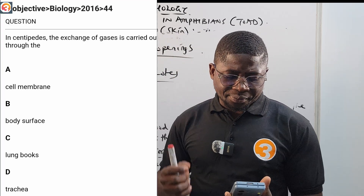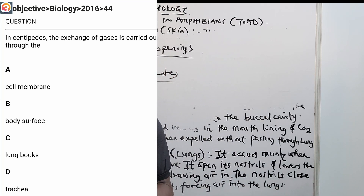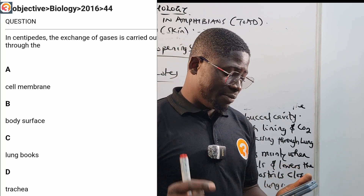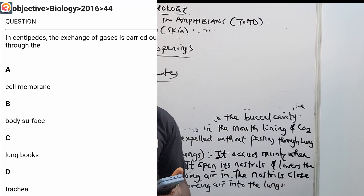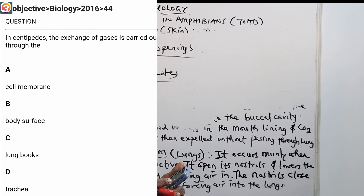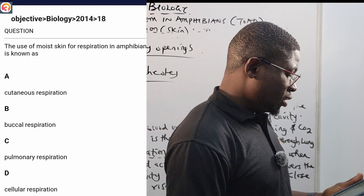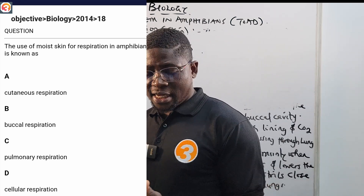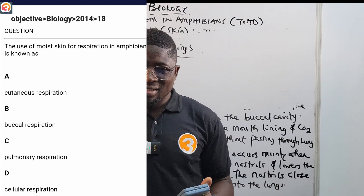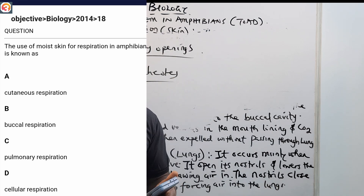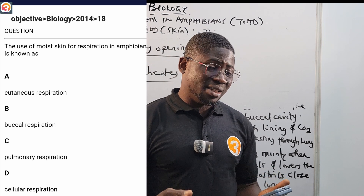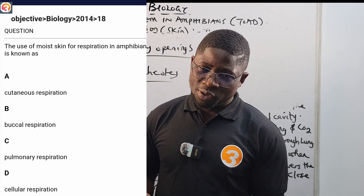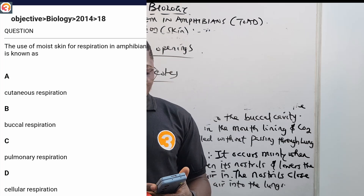2016 question 44: 'In centipedes, the exchange of gases is carried out through: A) Cell membrane, B) Body surface, C) Lung books, D) Trachea.' The correct answer is D — the trachea. Then 2014 question 18: 'The use of moist skin for respiration in amphibians is known as...' Moist skin means continuous respiration, so the correct answer is option A.